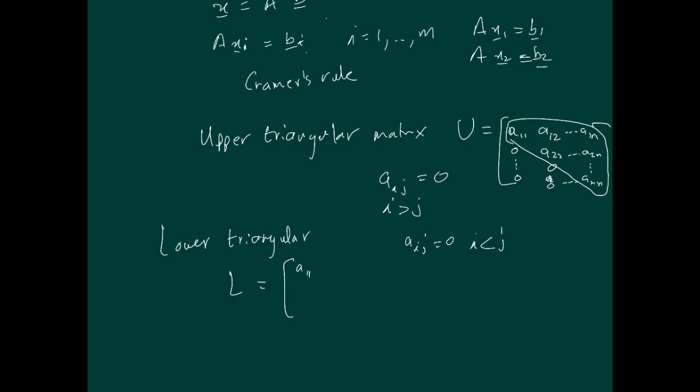and everything down here is all non-zero. So that's A1 and all the way to Ann. So this is a lower triangular matrix.